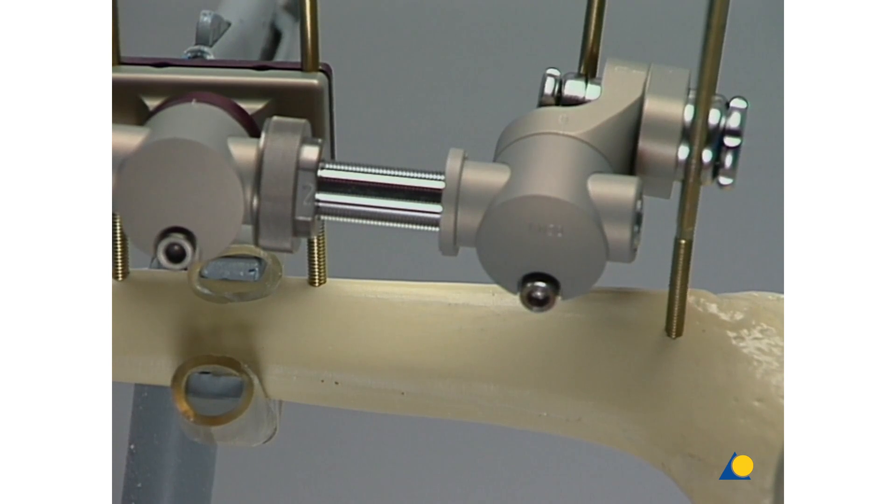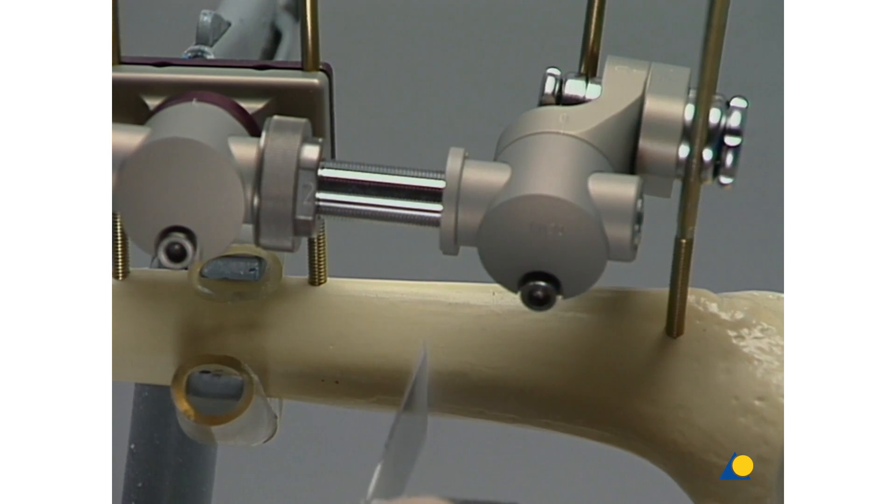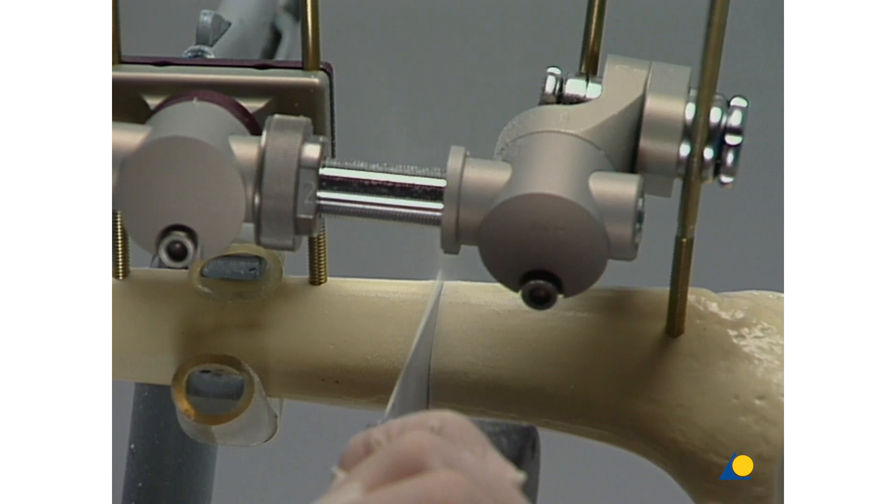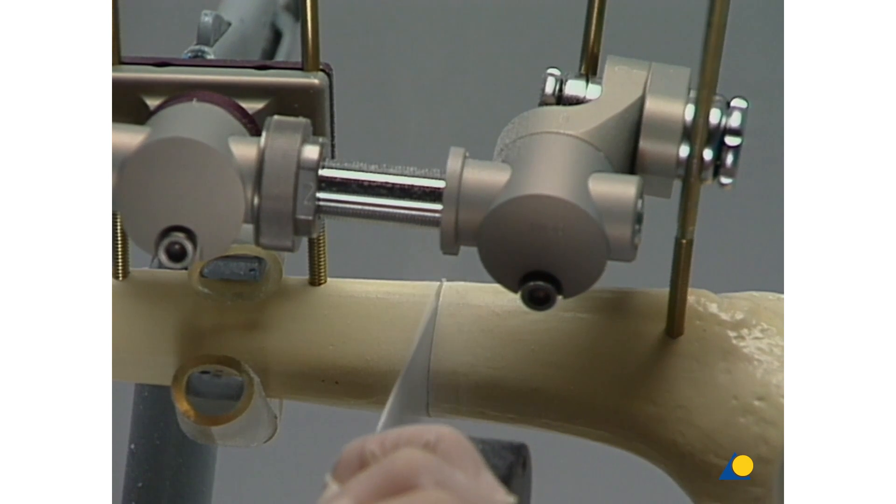The site of the corticotomy is shown on the proximal shaft, below the tibial head. In this exercise, the corticotomy is carried out with an oscillating saw, although it is clear that clinically a corticotomy is preferably performed with the corresponding chisels taking care of the surrounding tissue.